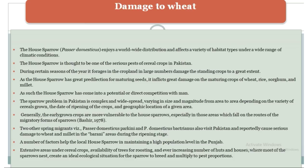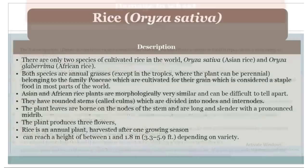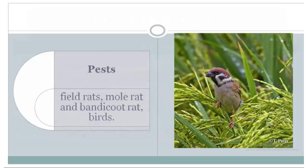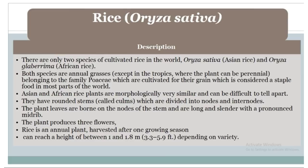Rice (Oryza sativa): there are only two species of cultivated rice in the world — Oryza sativa, Asian rice, and Oryza glaberrima, African rice. Both species are annual grasses, except in the tropics where the plant can be perennial. They belong to the family Poaceae and are cultivated for their grains, which are considered a staple food in most parts of the world. Asian and African rice plants are morphologically very similar and can be difficult to tell apart. They have rounded stems called culms which are divided into nodes and internodes. The plant leaves are drawn on the nodes; the stems are long and slender with a pronounced midrib.